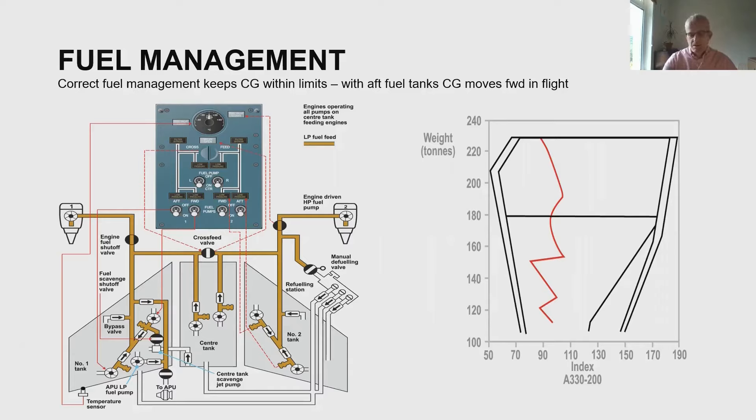In a basic short haul aircraft like this, we've got three tanks - one in each wing and a center tank, and we've got quite a sophisticated system to make sure that it stays in balance.